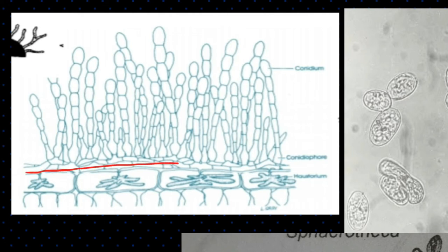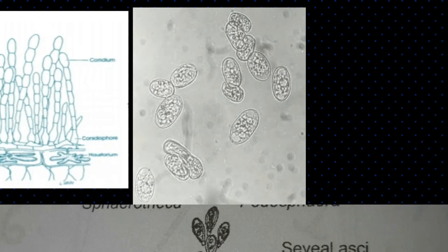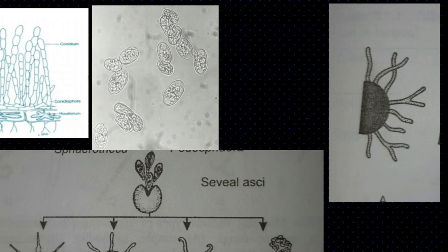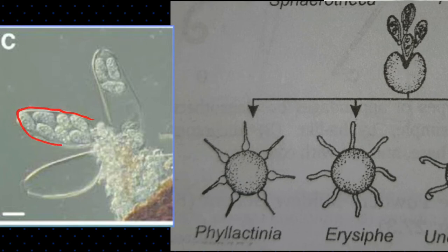As you can see in the picture, the mycelium is present on the plant surface and does not enter the plant cells. Instead, it forms haustoria to gain nutrition from the plant. The conidiophores bear conidia, which are always formed in chains. The conidia of powdery mildew are large in size because they contain 70% water. The cleistothecia contain asci, which contain ascospores. The cleistothecia have simple myceloid appendages, and each ascus contains 8 ascospores.